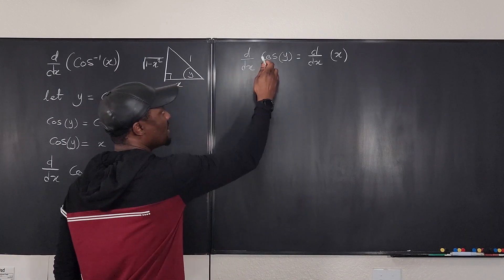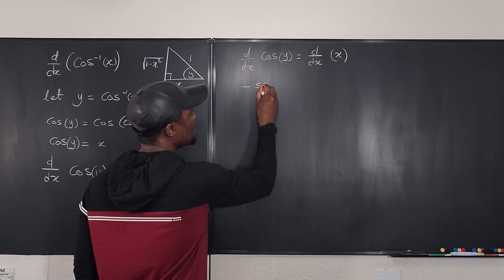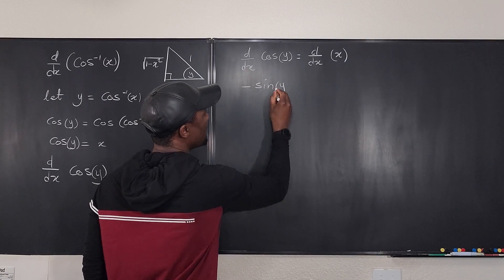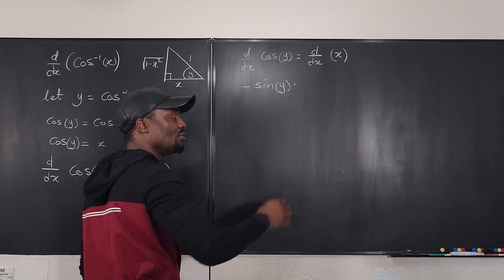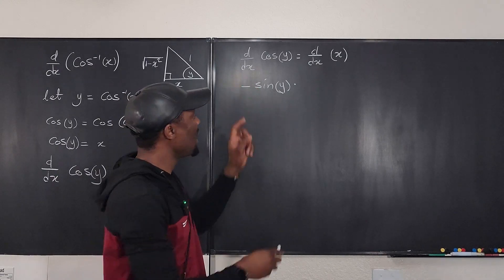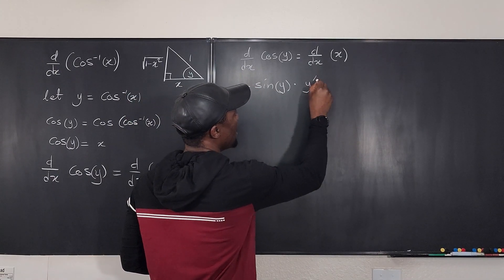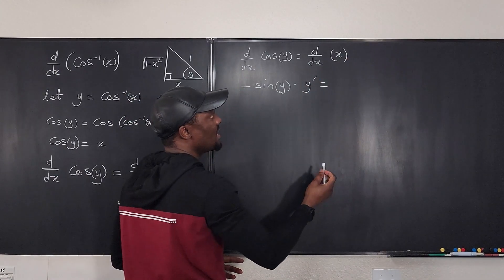So the derivative of cosine is negative sine y. Remember that. But you have to multiply by the derivative of y because you're differentiating with respect to x. So it will be times y prime. And if you differentiate this, what do you get? You get one.